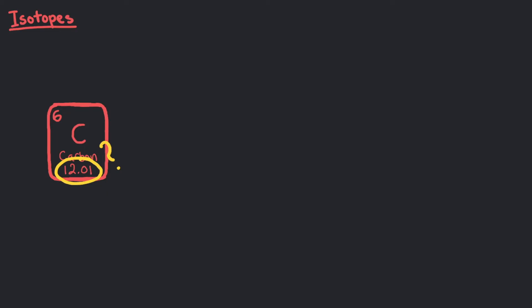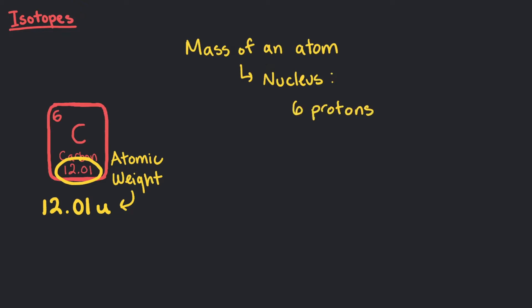So what is this other number, 12.01? This is atomic weight, 12.01u. We've already said that the mass of the atom is due to the nucleus and we know that there are 6 protons each weighing 1u. So it might be reasonable for us to conclude that there are 6 neutrons each weighing 1u and the difference between 12 and 12.01 is just some rounding or maybe the electrons.